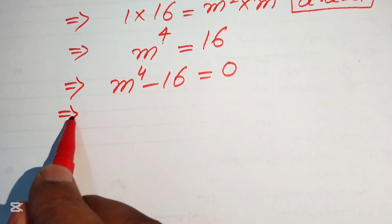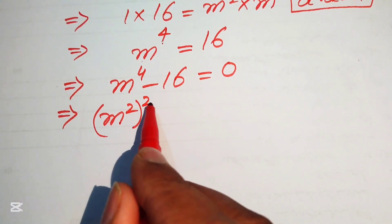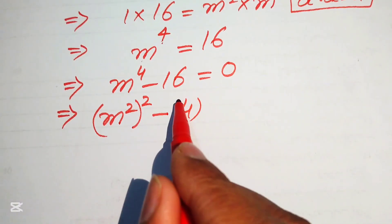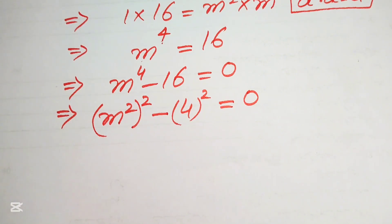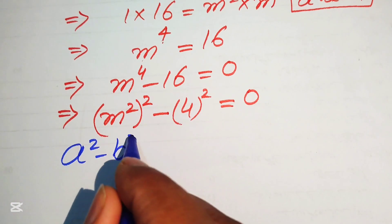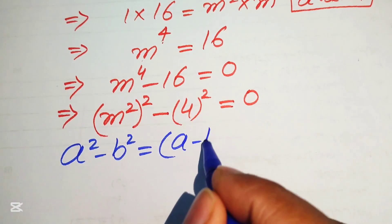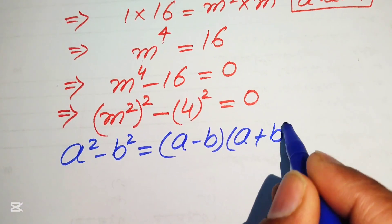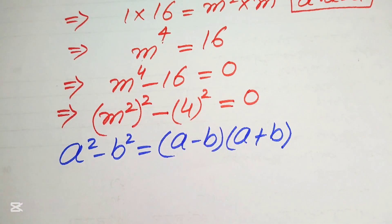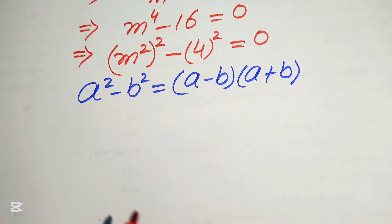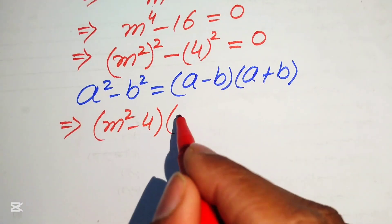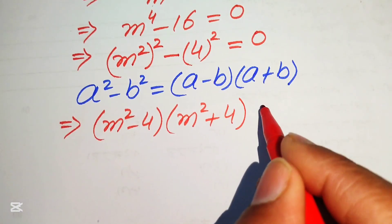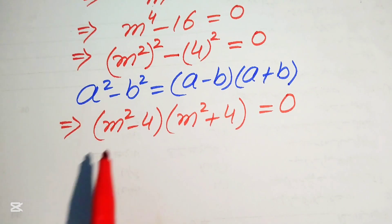We rewrite m⁴ as (m²)² and 16 as 4², so the equation becomes (m²)² - (4)² = 0. Applying the algebraic identity a² - b² = (a - b)(a + b), this factors as (m² - 4)(m² + 4) = 0.